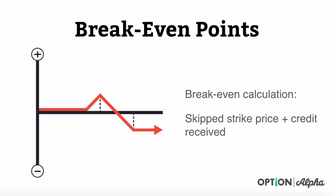As far as break even points, it's very easy to calculate with these strategies. Basically, what you do is you take the skipped strike price — whatever strike price you skipped over — and you add to that the credit that you received if you took in a credit. This gives you your break even point, which will be somewhere just over where that skipped strike price is.